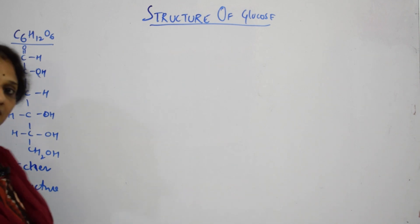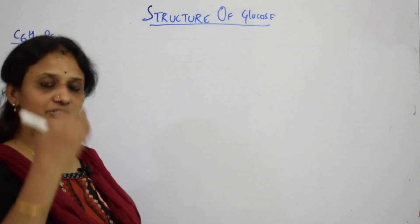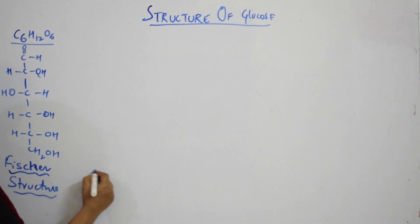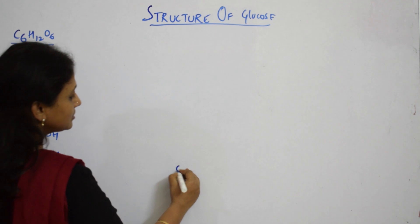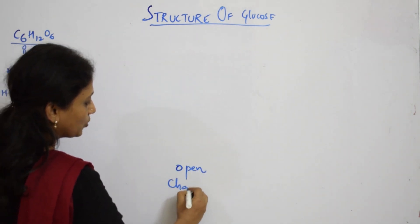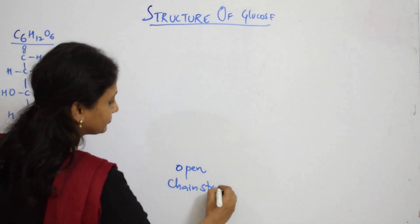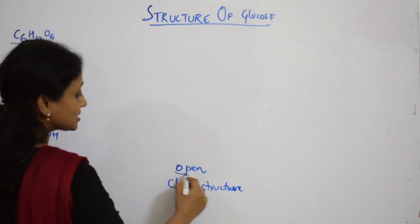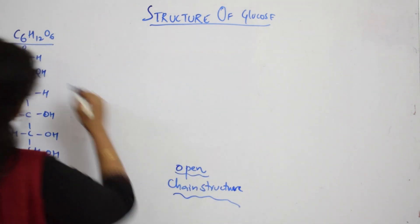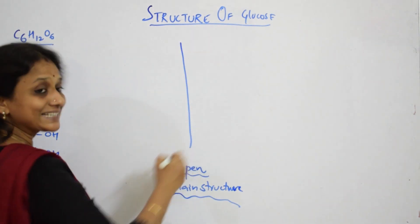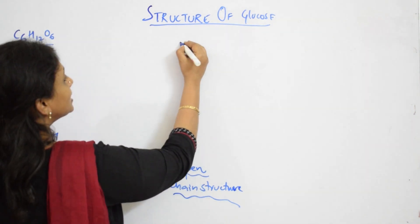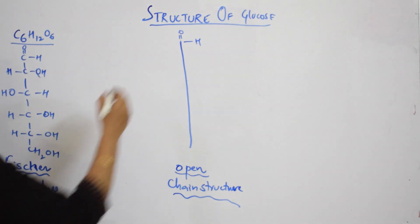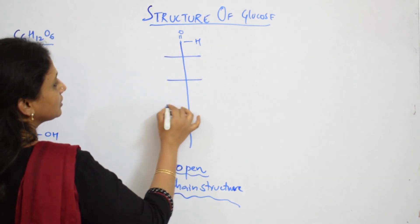Now let us make the Fischer structure. If you don't mention the carbon atoms, you're just going to draw the skeleton. I'll write it here: open chain structure. Compared to the previous drawing, you're not going to write the carbon atoms, just show the carbon skeleton. In the first carbon, what do you have? C double bond O and your H.